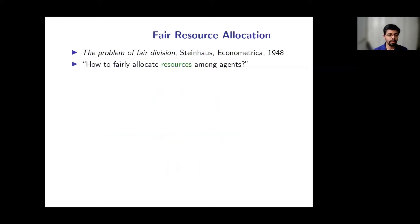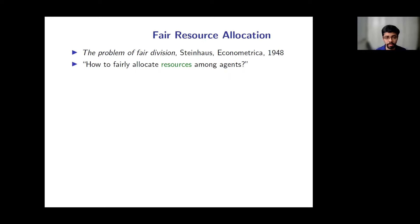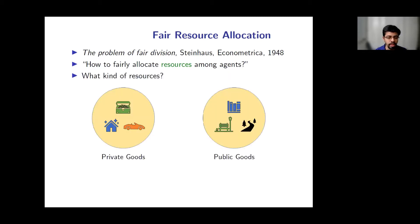The area of fair division or fair resource allocation dates back to the work of Steinhaus in 1948. The central question this area aims to address is: how do we divide resources among agents so that all participating agents perceive the resulting allocation as fair? Broadly, goods can be categorized as either private or public.